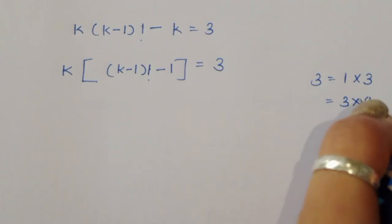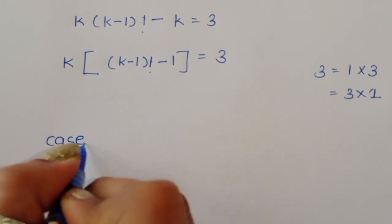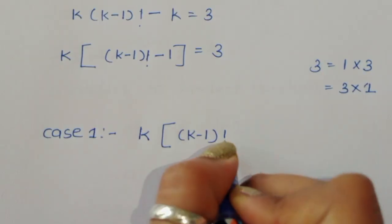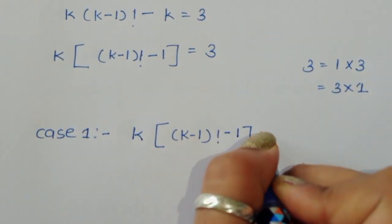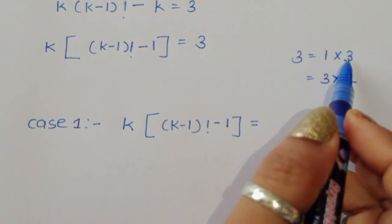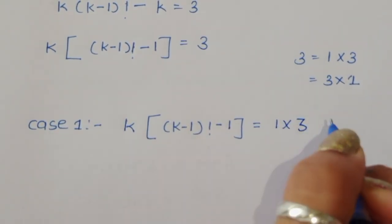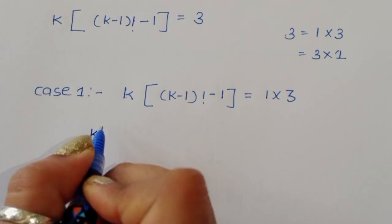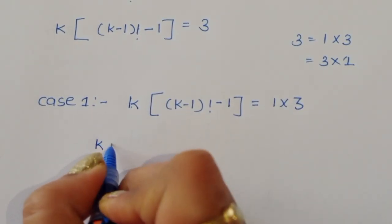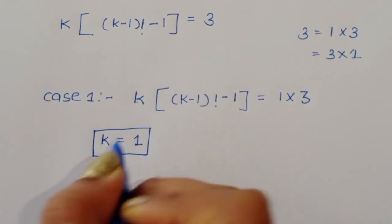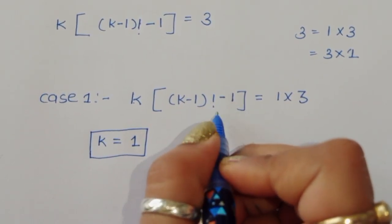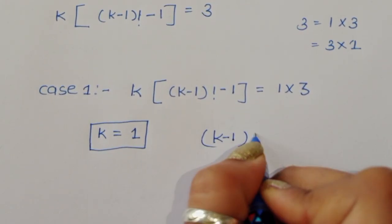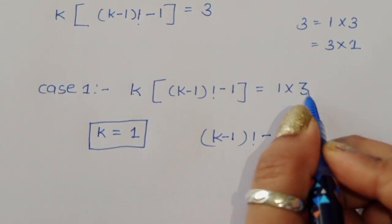We consider two cases. In Case 1: k times (k minus 1) factorial minus 1 equals 1 times 3. Comparing LHS and RHS, we get k equals 1, and (k minus 1) factorial minus 1 equals 3.